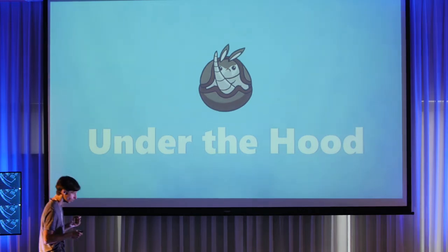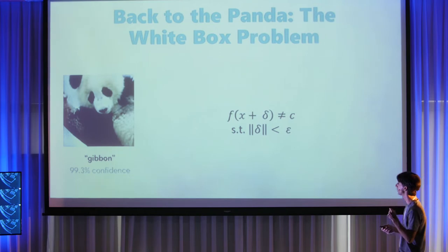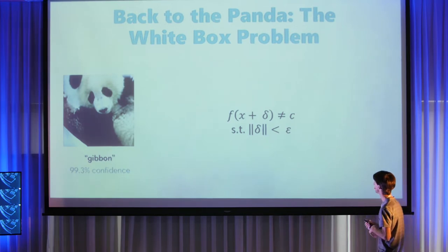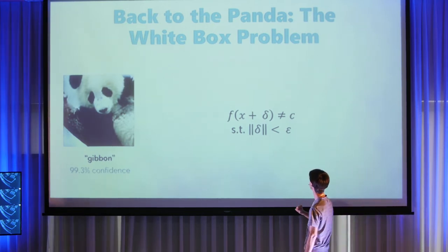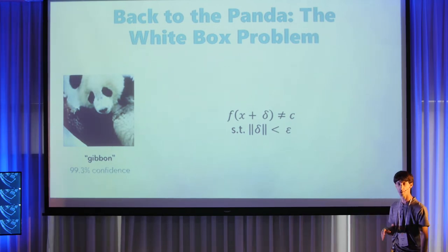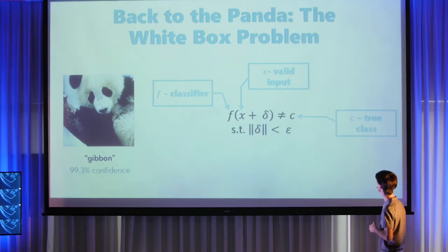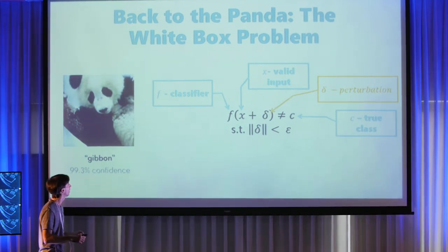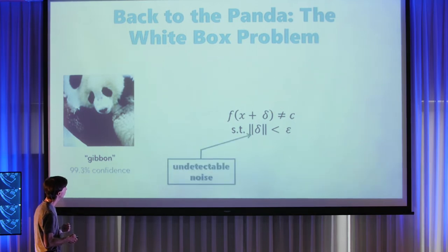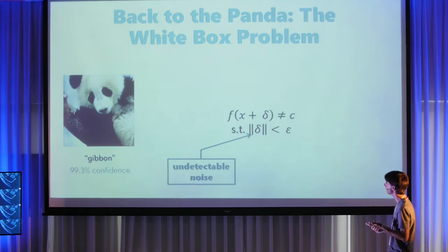Let's understand how the basic mechanics work. We take a panda — our input x — and we're looking for some perturbation delta such that when we apply the neural network f, we get a different classification other than c, the correct class. We've got a classifier, a valid input, the true class, and we're looking for a perturbation so that f produces something different than c. And while doing so, we also want delta to be small — small enough that people cannot detect it. The only problem is that solving this pair of equations is complex.